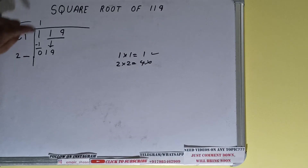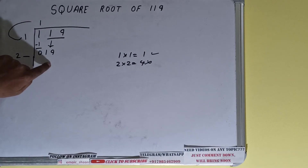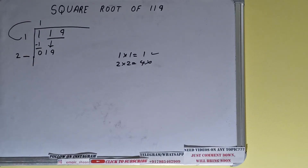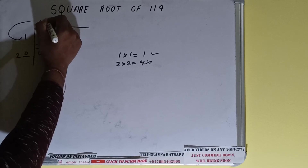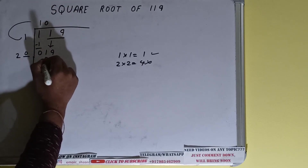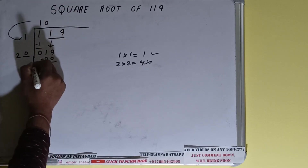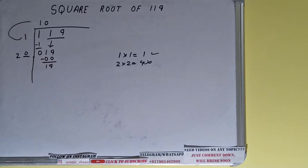The rule is: whatever number we use in the quotient, we use in the divisor as well. If we use 1 here and 1 here, we get 21, which is greater than 19, so we cannot use that. We have to use 0. Subtracting, we're left with 19.